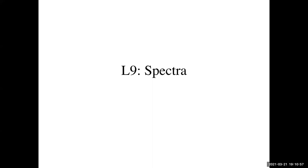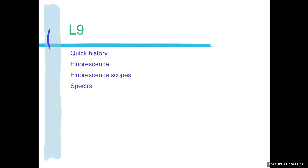Welcome to BioSci 101, spring 2021. This is Dr. Georgie, and this is the ninth lecture. We're going to talk about fluorescence spectra. I'll do a quick history recap, since I gave you one last week, then recap fluorescence and fluorescent scopes, and the topic of the day is learning about spectra.